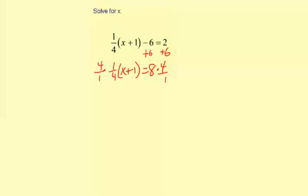So 4 times 1 is 4, 1 times 4 is 4. Makes 4 divided by 4, which is 1. And that means that this is all gone now.